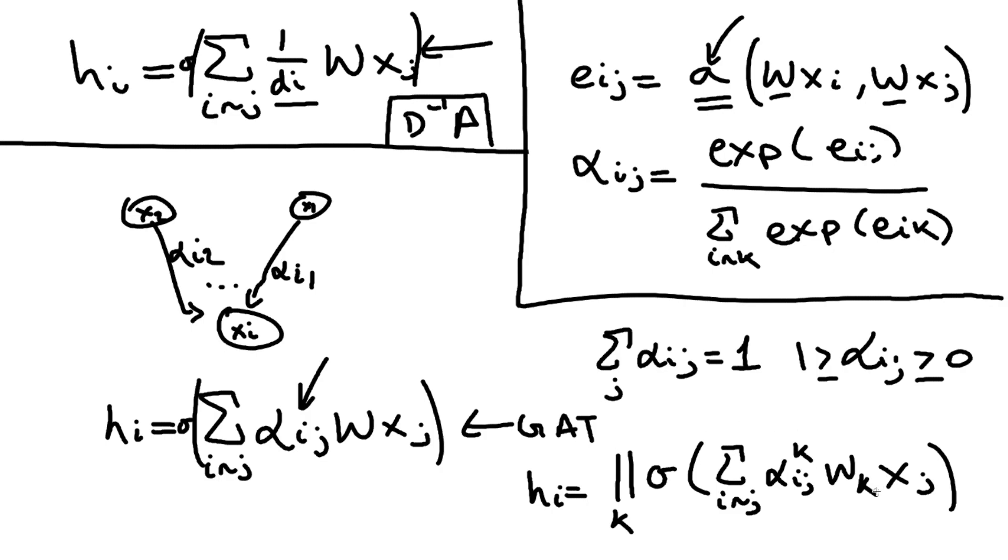This is actually just a form of regularization - you can imagine this maybe as some kind of ensemble. What may tend to happen is that if you only learn one of these attention heads, your training might be unstable or you might have a lot of variance in your outputs. So this is just a way to make training more stable and help with overfitting.